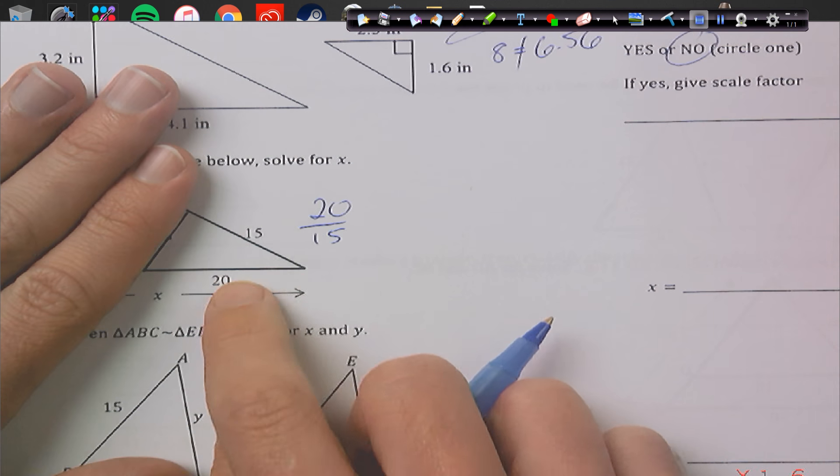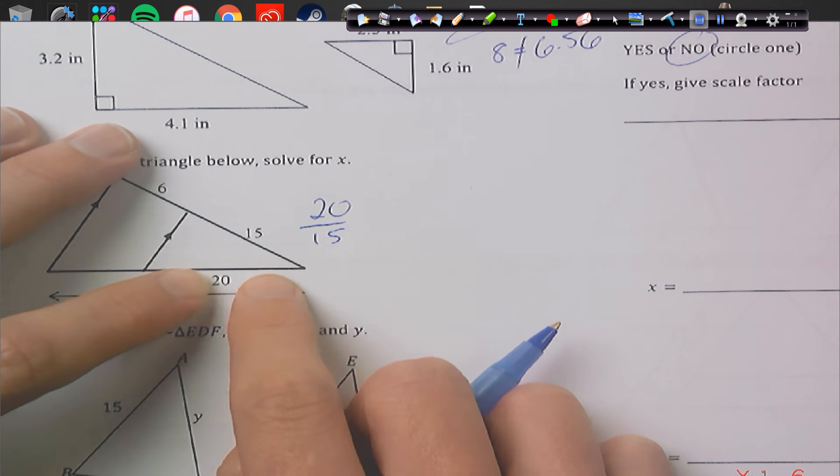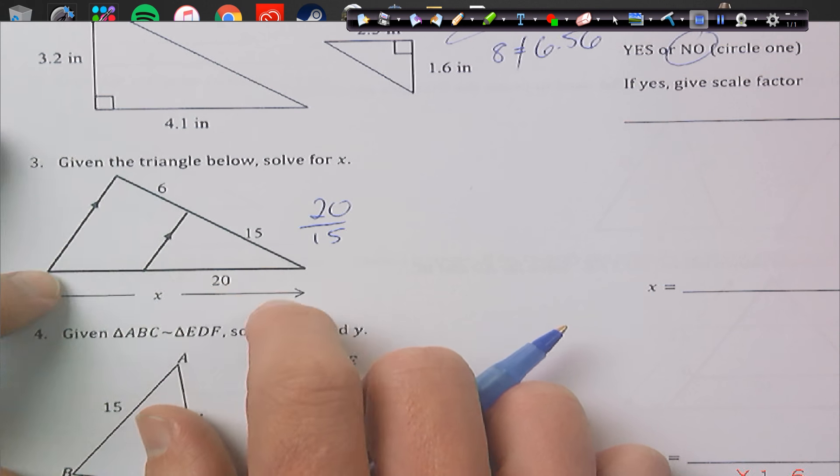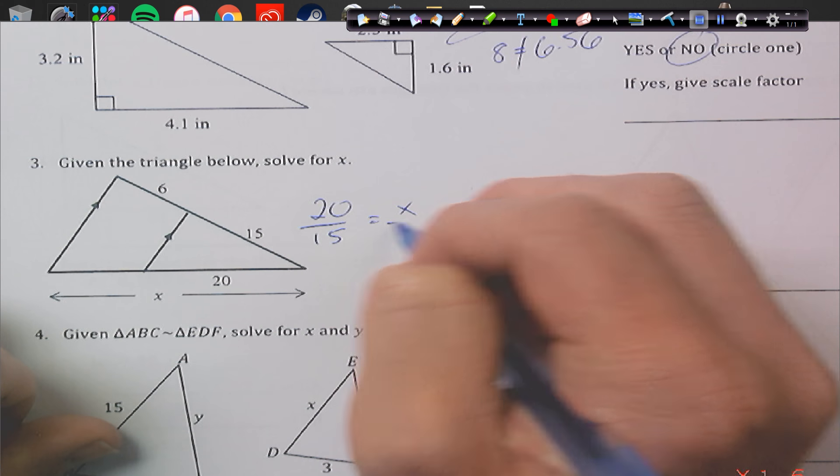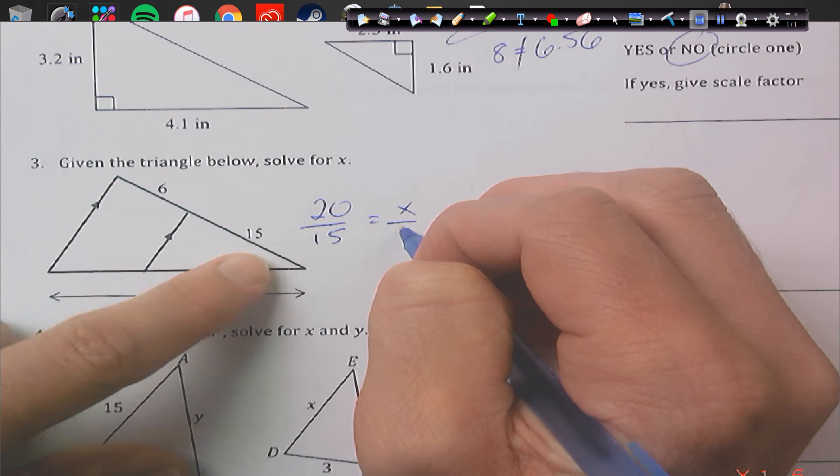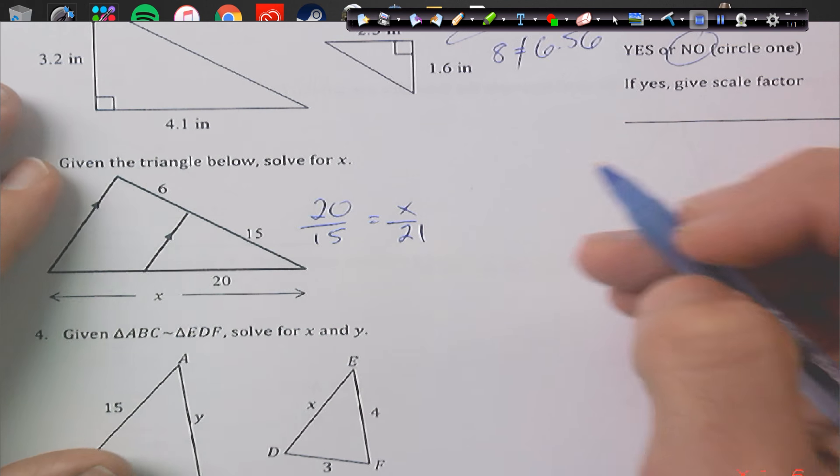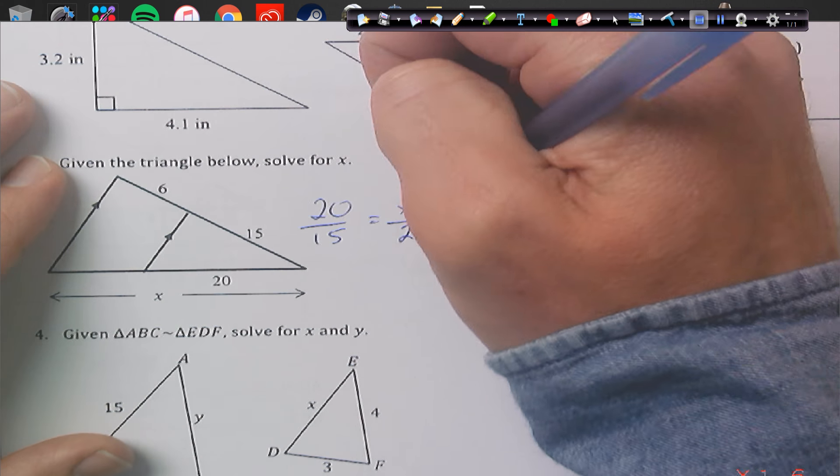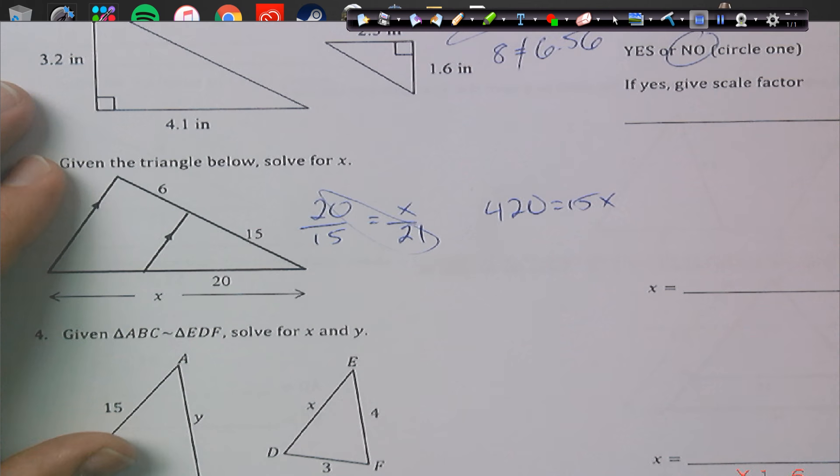So 20 should be similar to 15, as x is similar to 6 plus 15. So you take the pieces that are similar to each other, so 20 to 15, so I'm doing basically the bottom to the top of the small triangle, and then the bottom to the top of the big triangle. So bottom to the top, and that's 15 plus 16, which is 21. And we're going to cross multiply here. 20 times 21 is 420, if we cross multiply that way. And that will equal 15x, and then we divide by 15, and x equals 28.